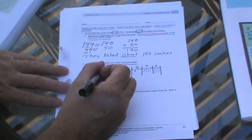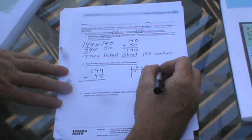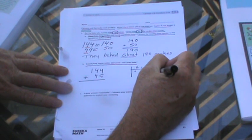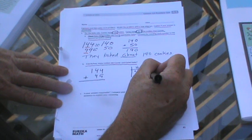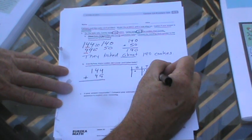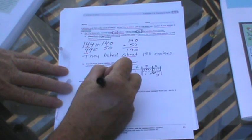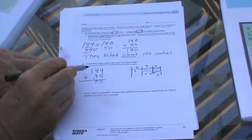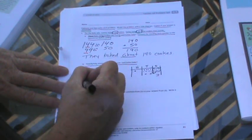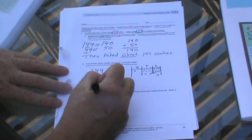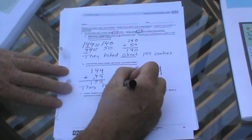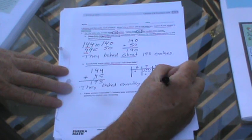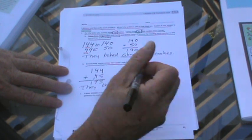Four plus nine is thirteen, so we put the three and carry the one. Then we have nine tens plus four tens, which gives us nine, and then one hundred. They baked exactly 193 cookies. So that much we do know.